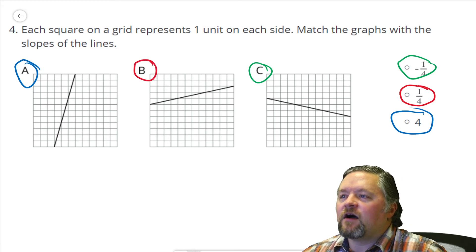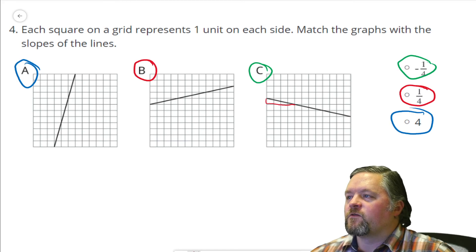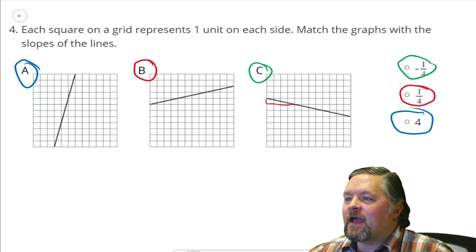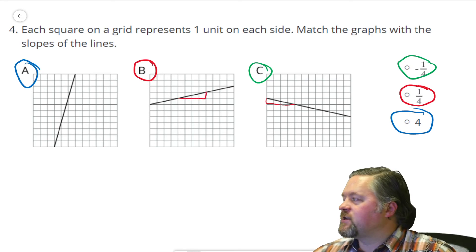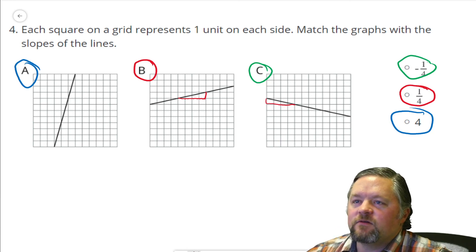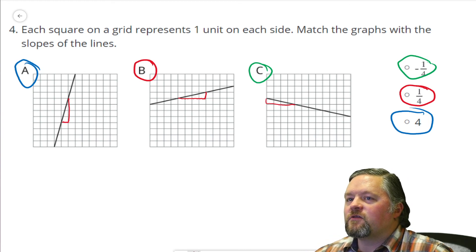Can I double check these? Rise over run, that looks like 1 over 4 but negative because it's going down. That looks like up 1 over 4 so that's positive so that checks out. And this one here looks like we go up 4 over 1 so that checks out with positive 4.